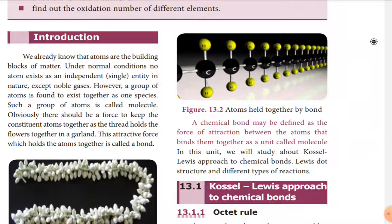Electrons revolve around the nucleus. These are the three fundamental particles of an atom. Molecules are formed when a group of atoms — same kind or different kinds — combine together. A kind of force which attracts and holds atoms together is what we call chemical bonding. Take page number 148 and listen.